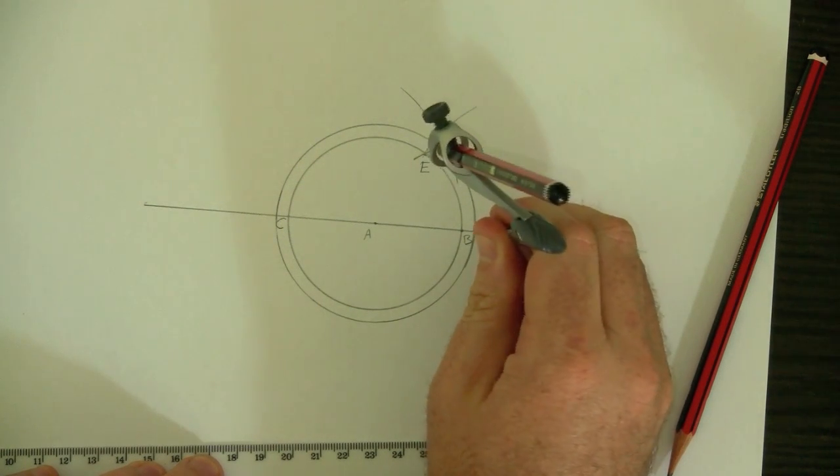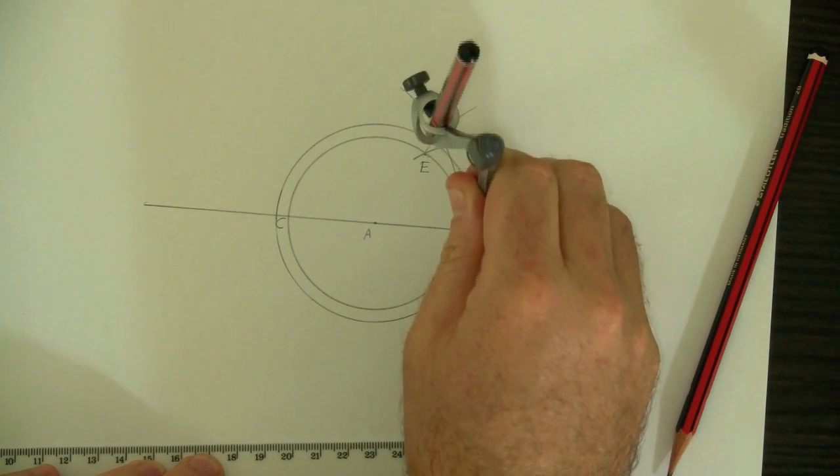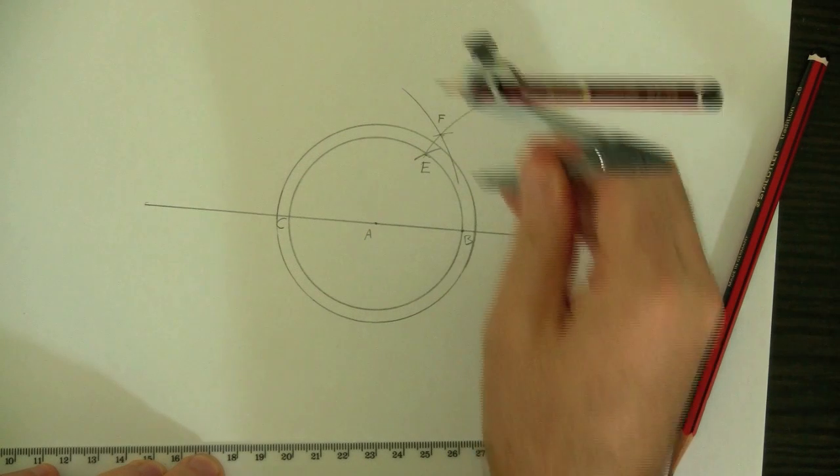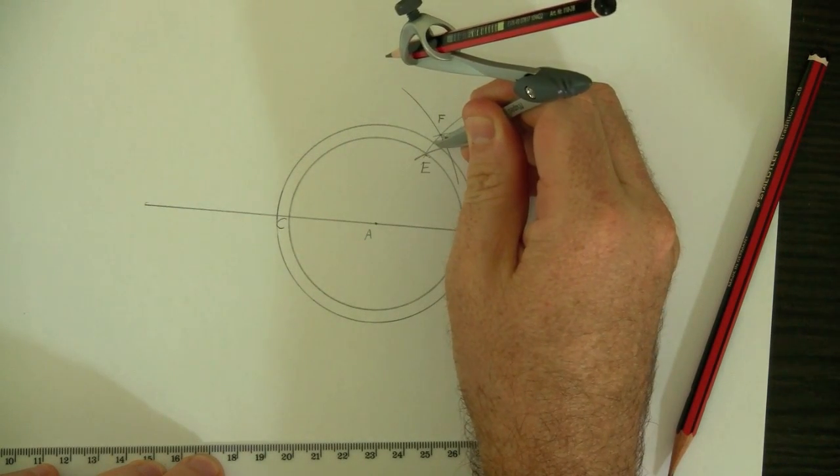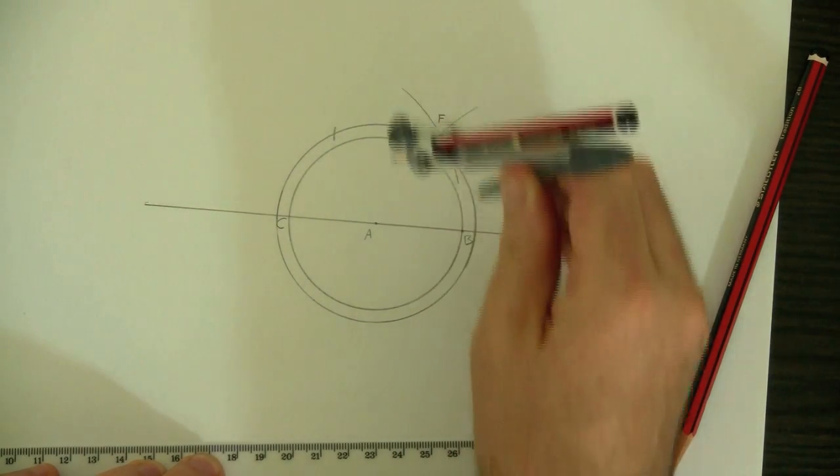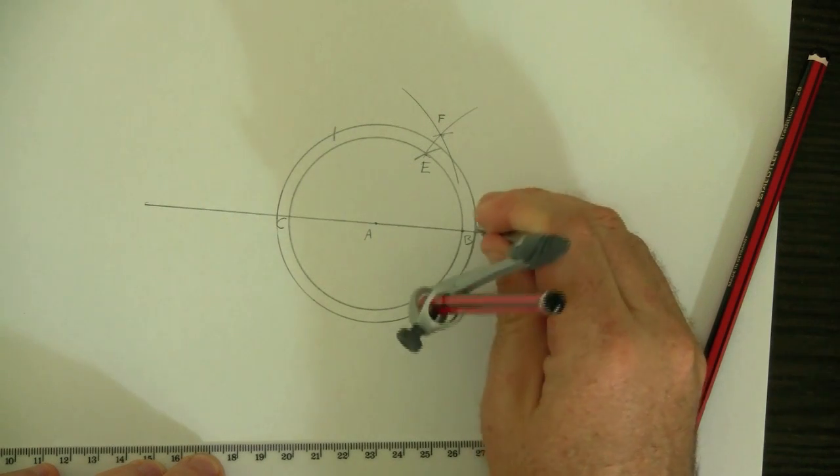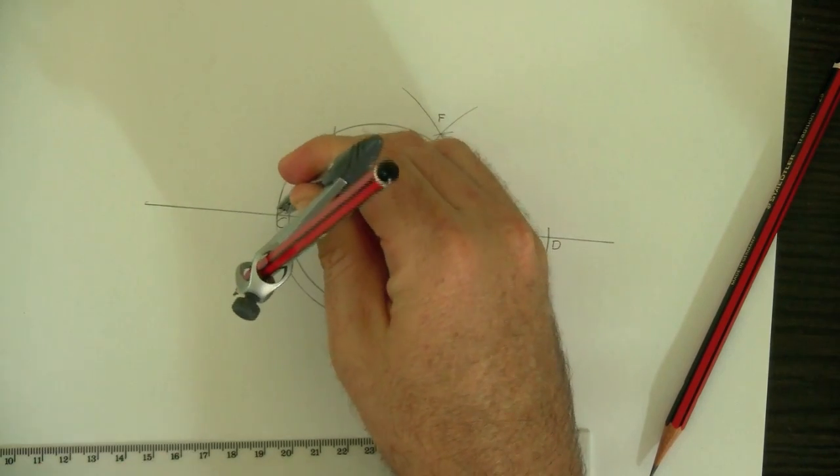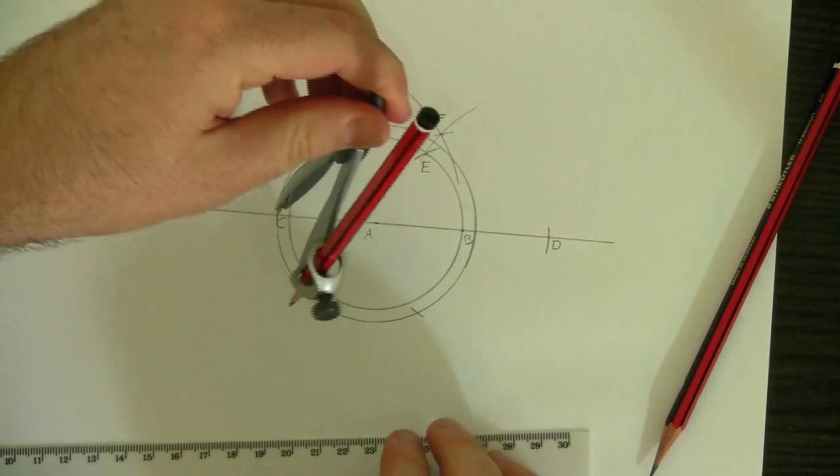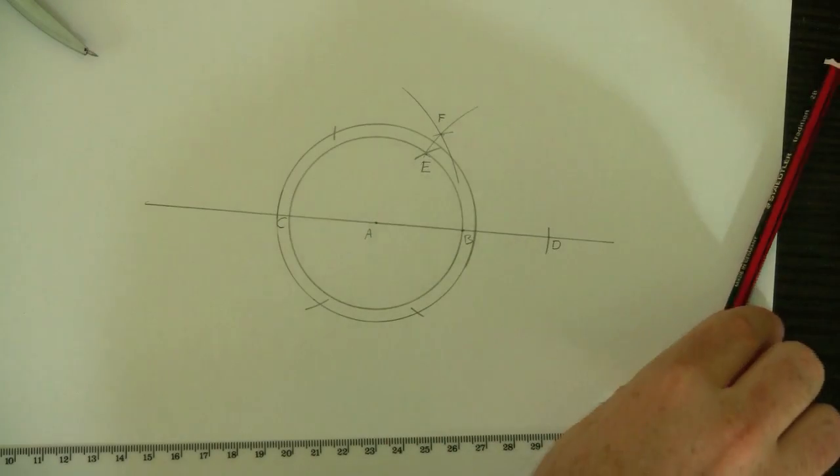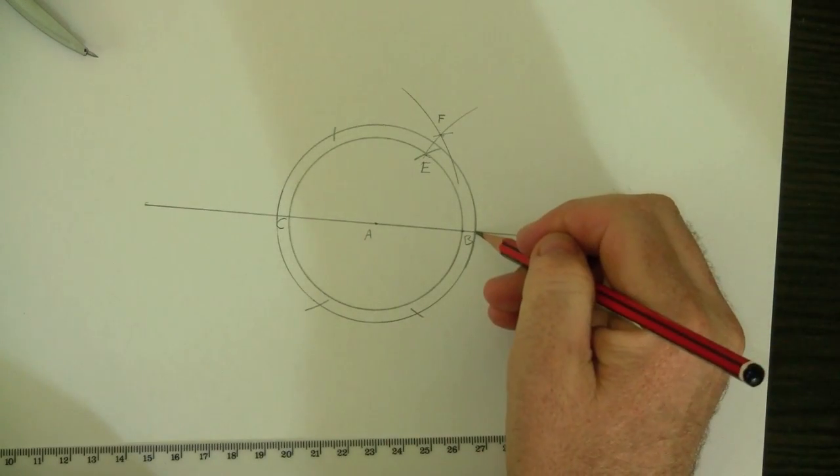And I've already got two points on this circle. This one, which I haven't named, and another point here, which I haven't named. But if we start with those points, and draw some little arcs, and another little arc from this point here next to C, which I haven't named. Now I've got six points around this big circle.